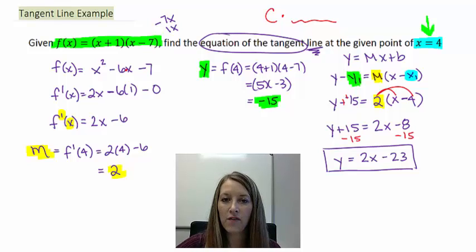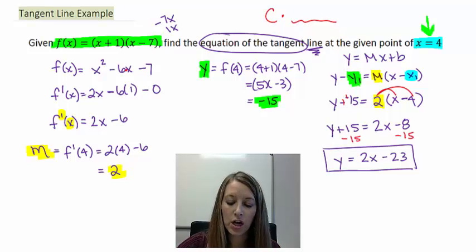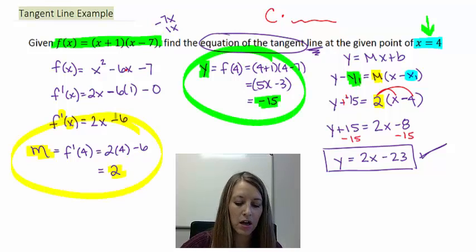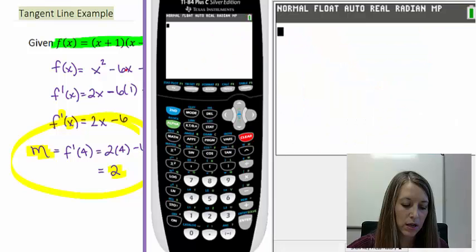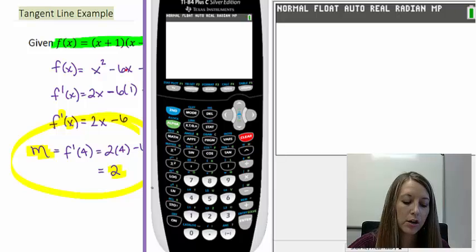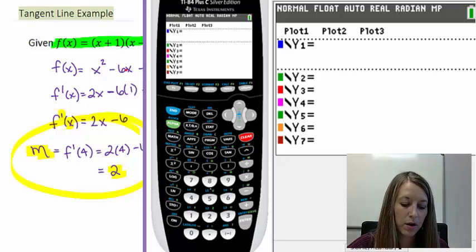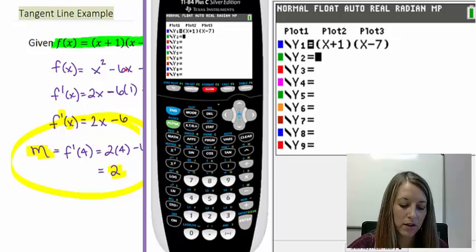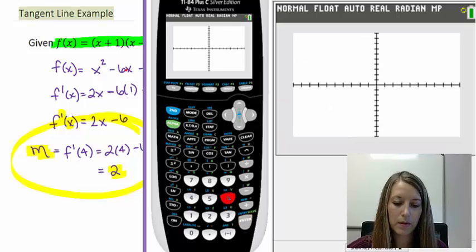Now, you can check this with your graphing calculator, and you can check the full thing, check my full equation, or I can check each individual part. I can check to make sure that I got my right y value, and I can check to make sure that I got the right slope. So the very first thing that we need to do is plug in our equation into y equals. So I'm going to plug in my equation given to us as is, (x + 1)(x - 7). Graph it on the standard window. And here is my equation.